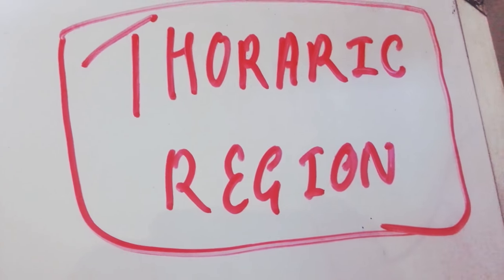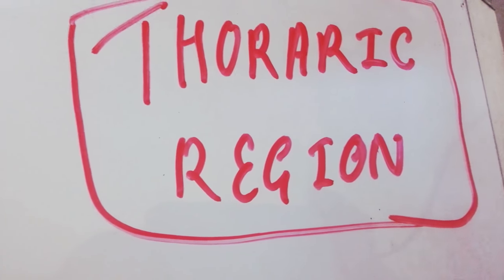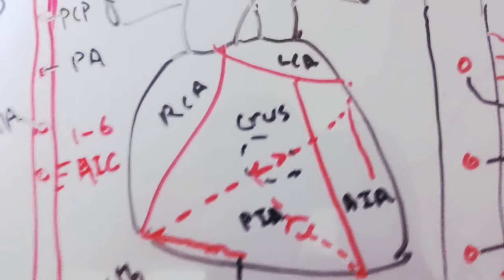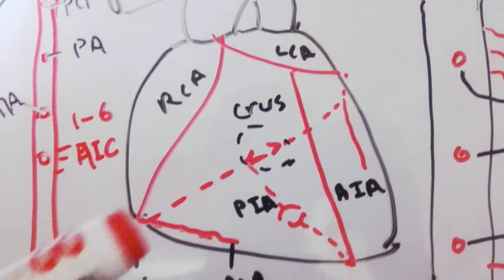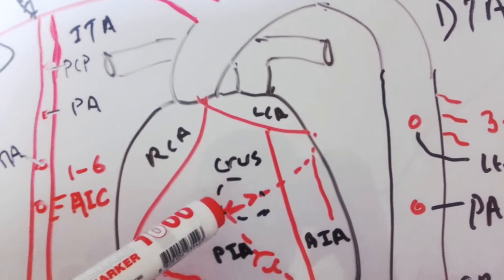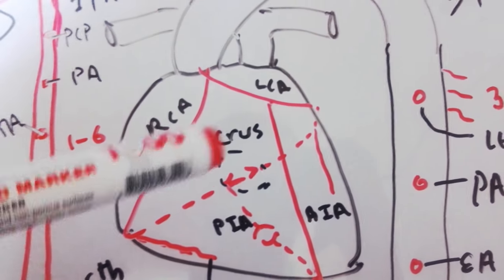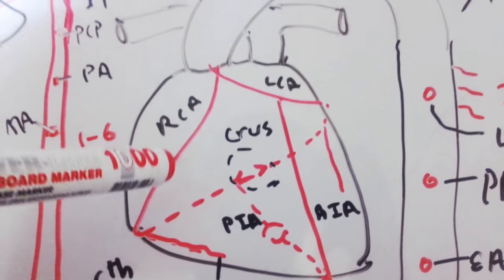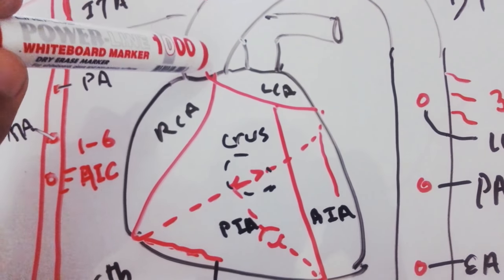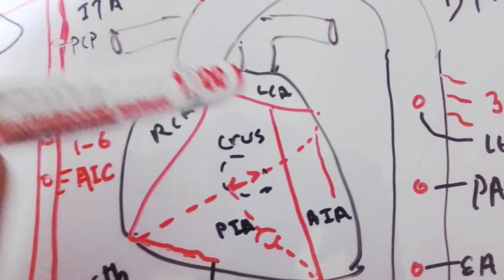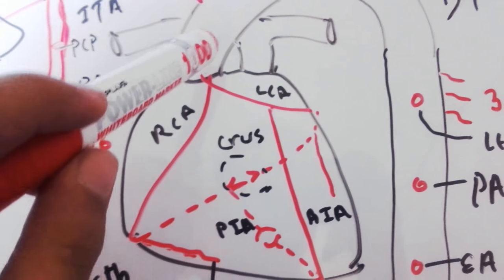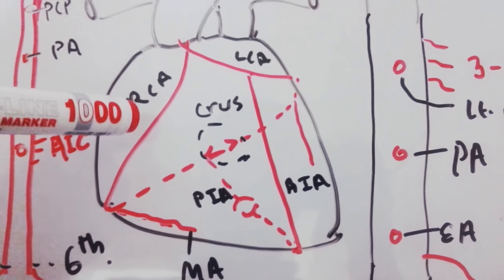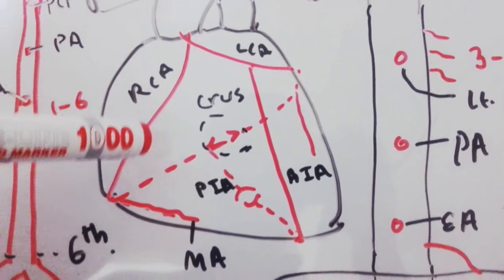This is the video on the artery supply of the thoracic region. For better understanding we have to know about the heart and the artery supply of the heart. The artery supply of the heart is the right coronary artery and left coronary artery. The right coronary artery arises from the anterior aortic sinus and left coronary artery arises from the posterior aortic sinus.